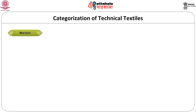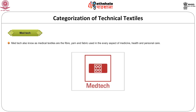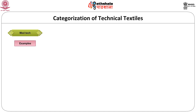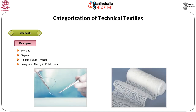Now let's move on to the next category — Meditech. As the name says, it is textile material used in the field of medicine, health and personal care. It is also known as medical textiles. It is represented by a bandage. The products range from soft, delicate contact lenses and diapers to stiff suture threads and heavy and steady artificial limbs. Here are some pictures of Meditech.